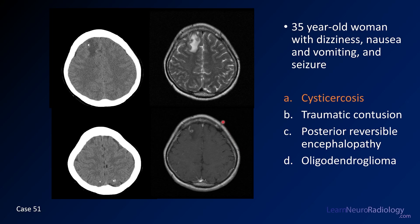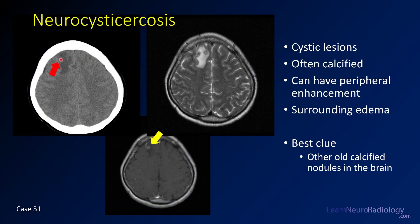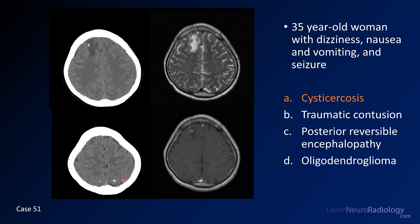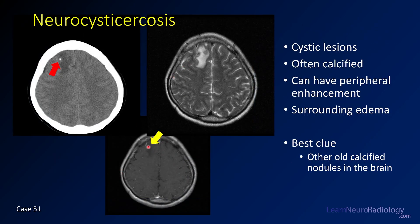This is a case of cysticercosis. On the CT you have some calcification with edema around it, and additional areas of calcification posteriorly. On the MR, there's a peripherally enhancing lesion with surrounding edema that is partially calcified — classic for neurocysticercosis. This is the most common cause of acquired seizure in Latin America and is common in the Southwest US. The best clue here was the other calcified nodules in the brain, suggesting previous episodes of granulomatous disease.